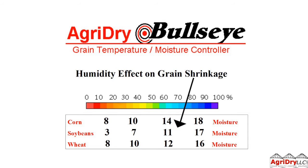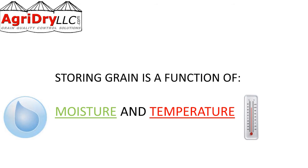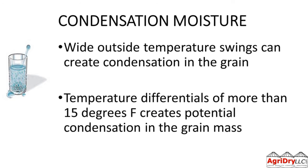The other factor is temperature — it's a function of moisture and temperature. If we have wide outside temperature swings, we can create condensation. Think of it like a cold glass of water on a hot day — condensation forms on the outside. Those temperature differentials are where we get the possibility of condensation.